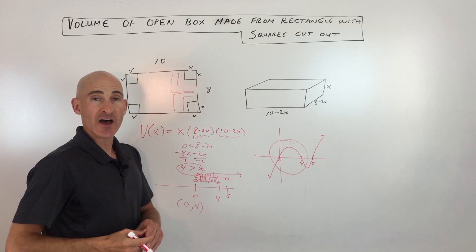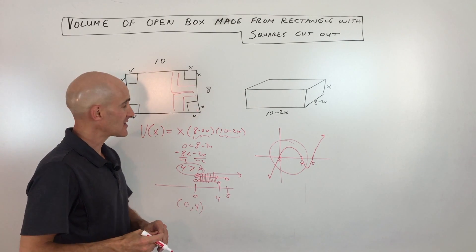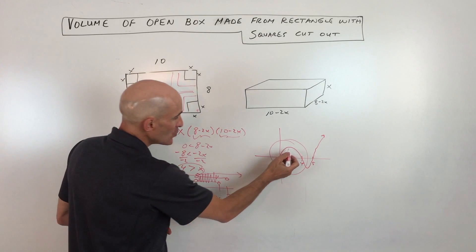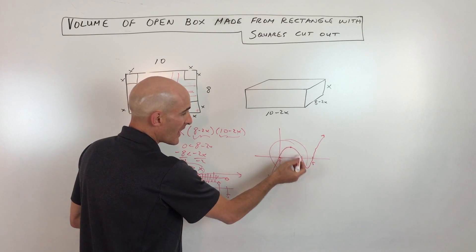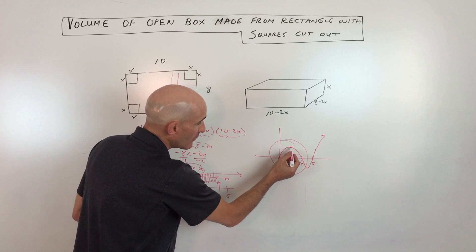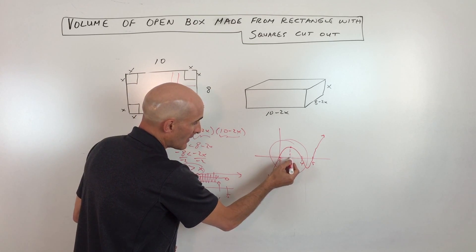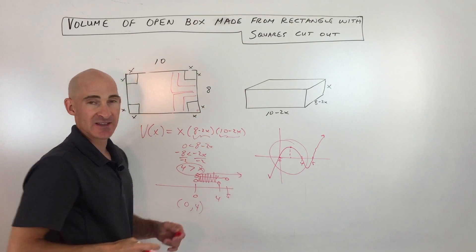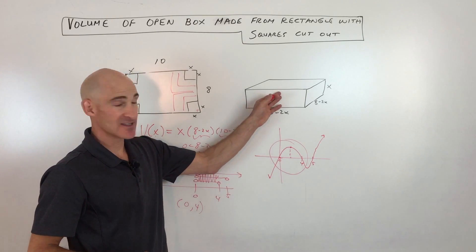If you want to maximize the volume, which is oftentimes what they ask in this type of problem, what you could do is you could use your calculator to find this relative maximum, this high point here. Then you look at the x-coordinate of the point, and that tells you the size of the squares that you need to cut out to maximize the volume of this box.